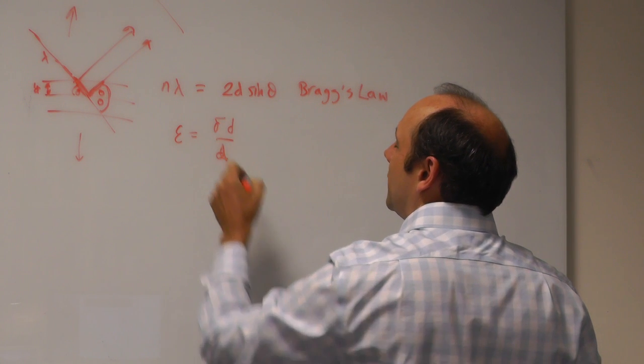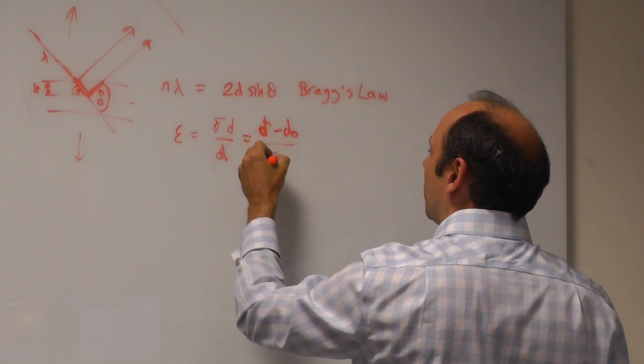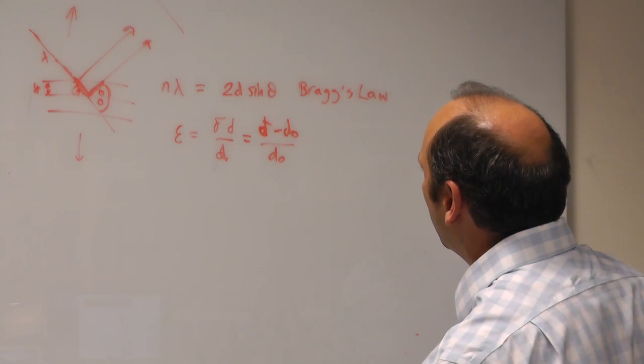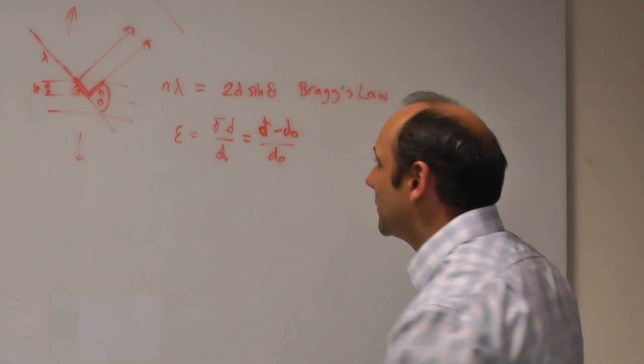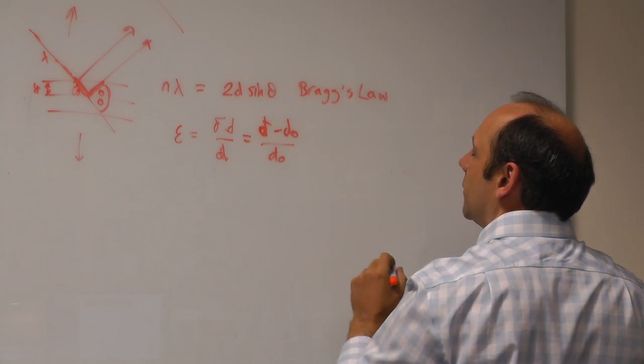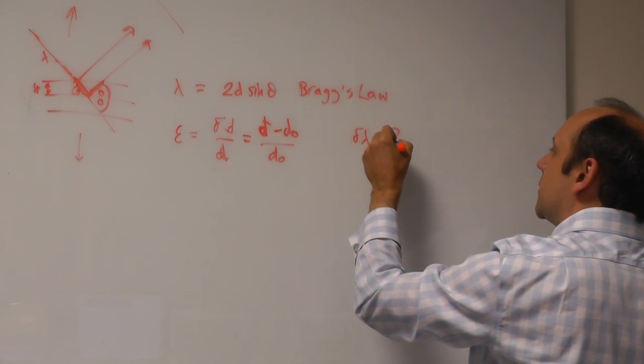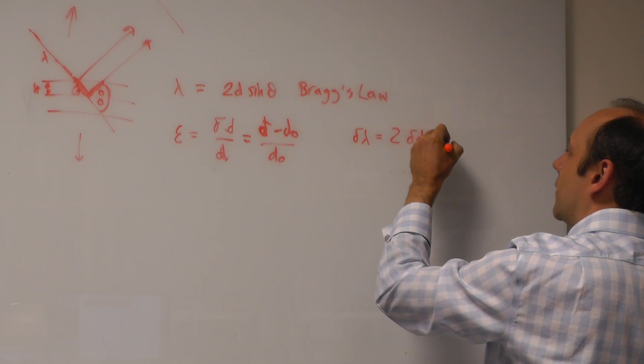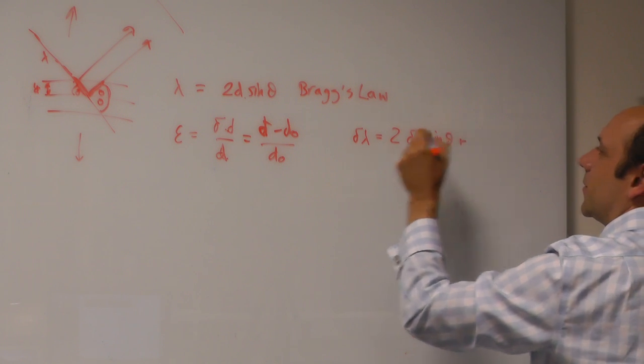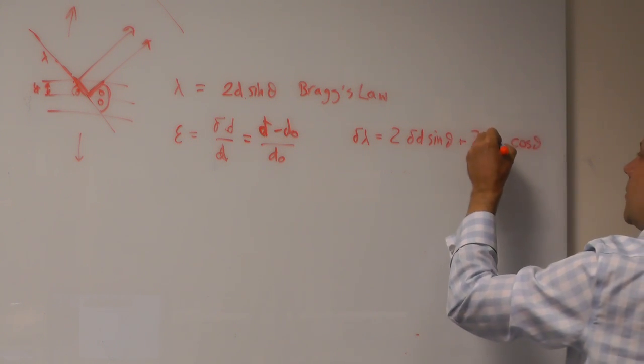So if we want to do this, we need to measure the change in d, so d minus some strain-free spacing d0 at some stress. And we need to know what partial d is. So if we differentiate Bragg's law, we can get an equation for it. So if I take the total differential of Bragg's law, I'm going to ignore the n, and I can say partial lambda is equal to 2 partial d sin theta, differentiate this and hold d. Differentiate d and hold theta, plus then differentiate theta and hold d, so 2d differential of sin theta is cos theta, and I get a partial theta.